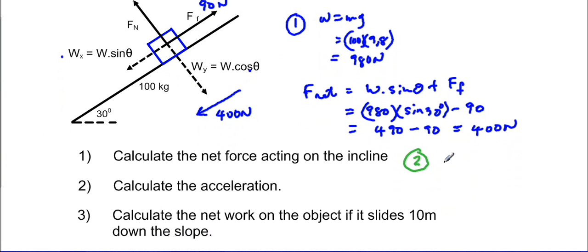So our acceleration is equals to F net over m. And our net force we worked it out here. It will be w sine theta minus F of friction, which gives us 490 minus 90, which is 400, all over our mass.